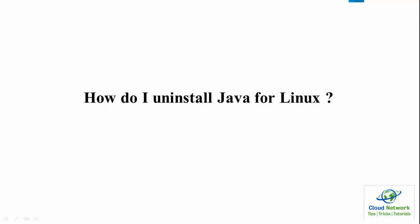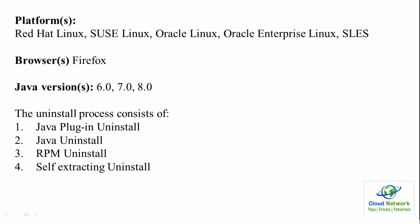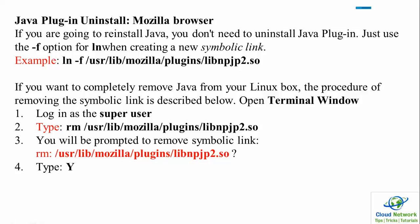For uninstalling Java on Linux — this is for Linux, including Oracle Enterprise Linux. Supported browsers include Firefox. Versions 6, 7, and 8 can be installed. The process covers: Java plugins uninstalling, Java RPM uninstalling, and self-extracting file uninstalling. There are four steps to completely remove Java. The first is Java plugins in the Mozilla browser. If you are going to reinstall Java, you do not need to reinstall the Java plugins — just use the '-f' option with 'ln' when creating symbolic links.